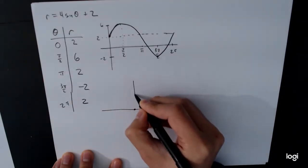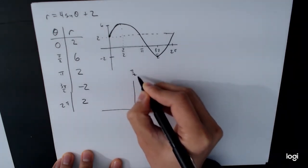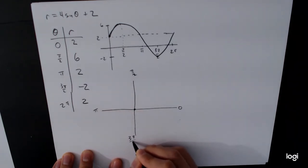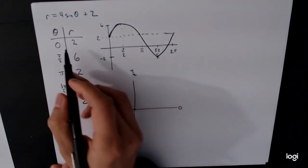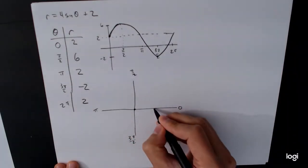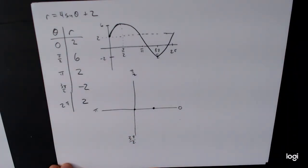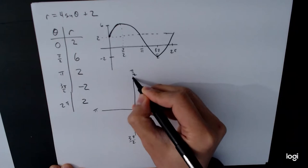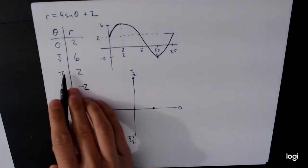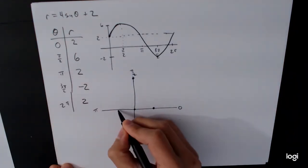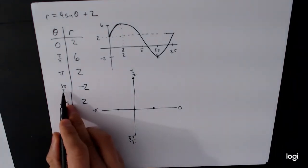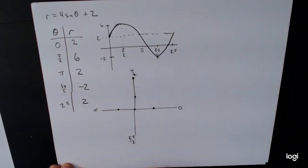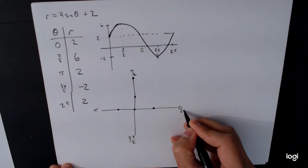Marking 0, pi over 2, pi, and 3 pi over 2. Our first point: theta equals 0, r equals 2 — it's going to be right about here. Our second point: theta equals pi over 2, r equals 6 — that's up here somewhere. The next point: theta is pi, r is 2 — that's over here. The next point: 3 pi over 2, r is negative 2 — it's going to be up here. And then 2 pi, also over here, radius 2 again.